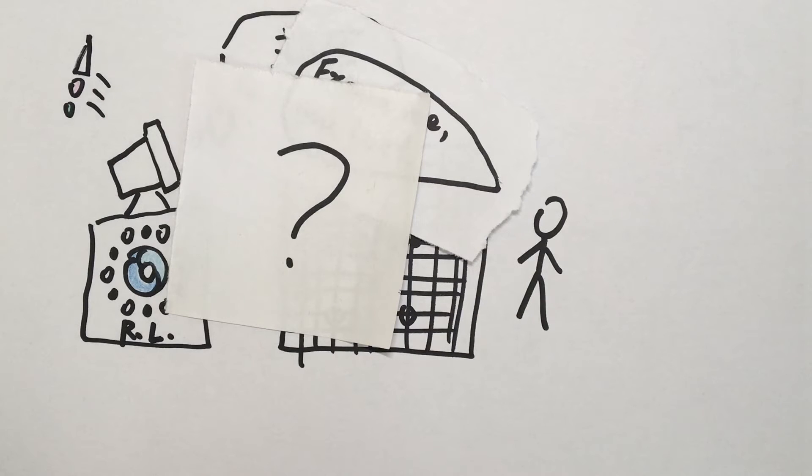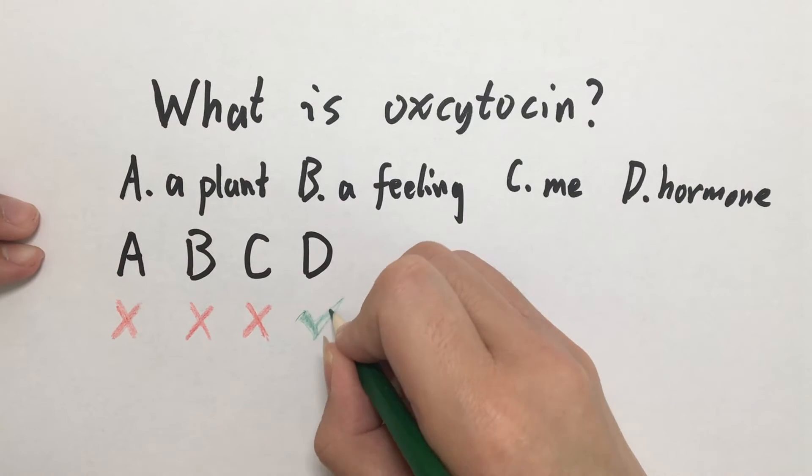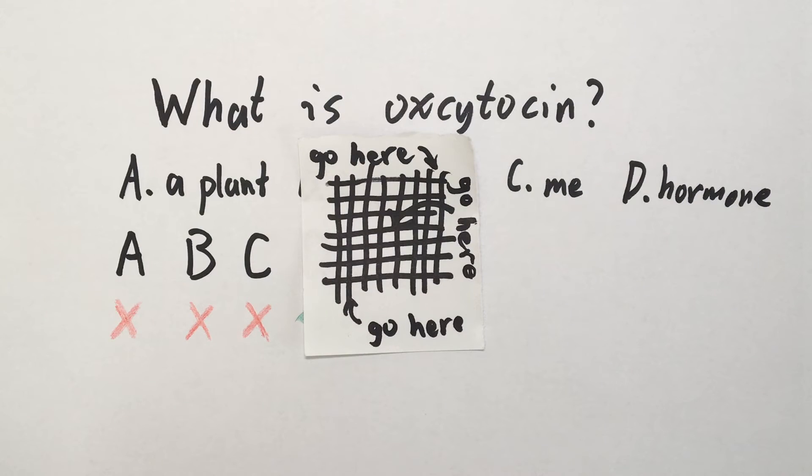But how can AlphaGo know what to do if we don't give it any instructions at all? Well, one way to implement machine learning is to try every single possibility. On a Go board, this is relatively straightforward.